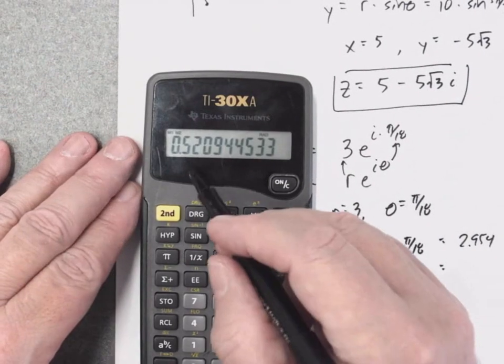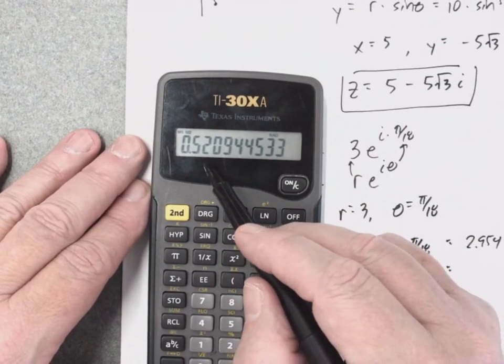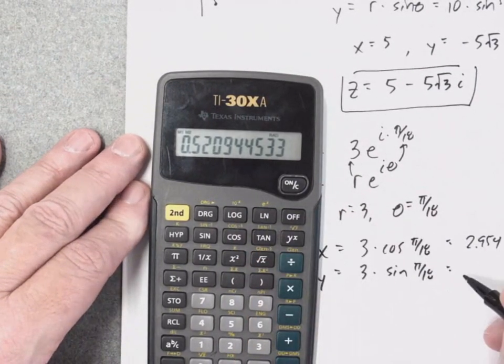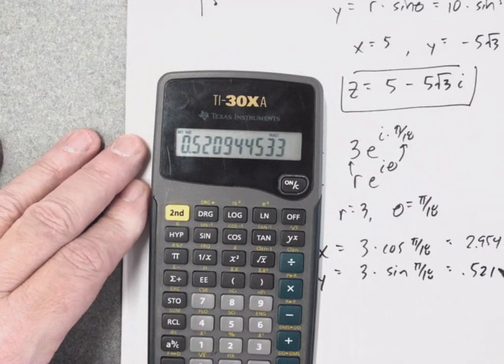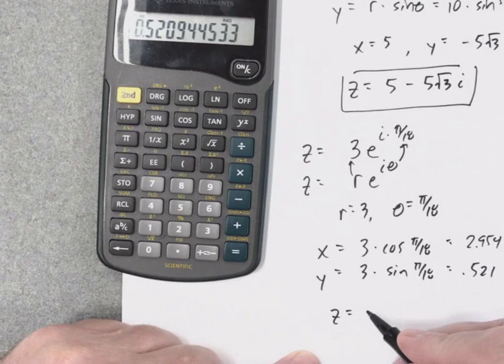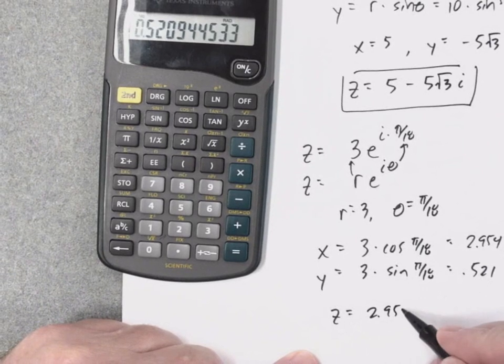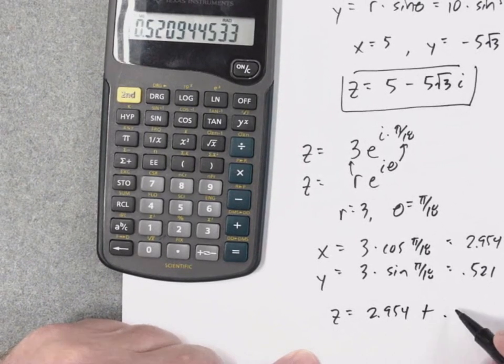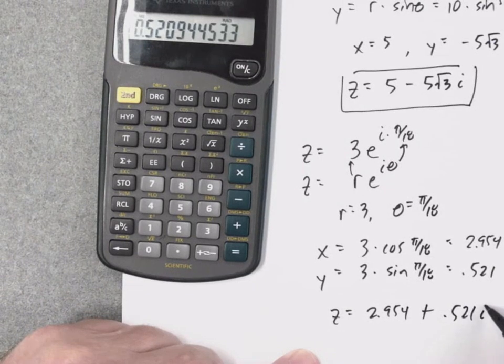All right, that makes me feel better. So this would be 0.521 it looks like. So in rectangular coordinates it's going to be 2.954 plus 0.521i.